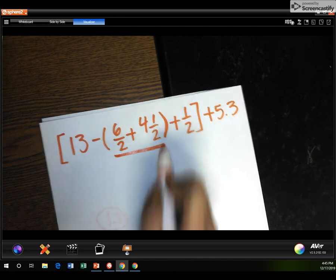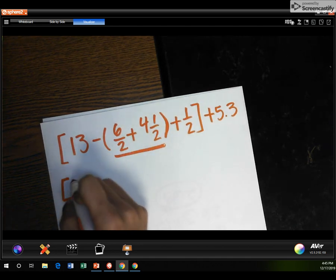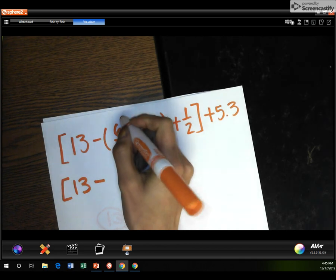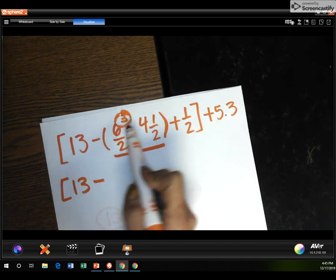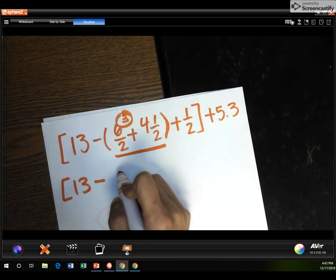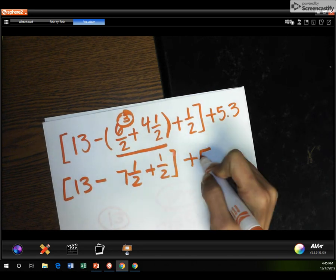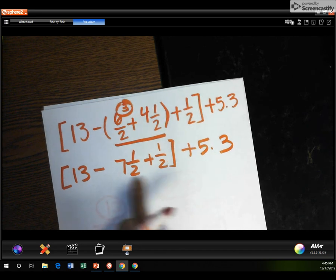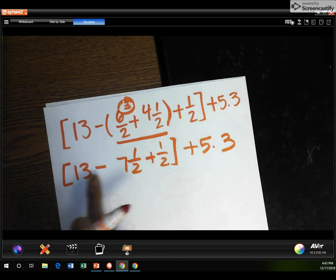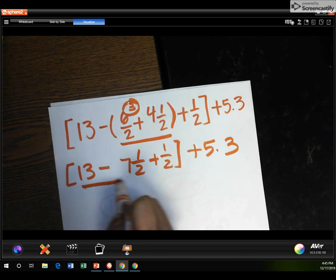All right. So first thing we're gonna do is we're gonna do parentheses, right? So that will be 13 minus... That's 3. That's 3 wholes, right? 3 wholes plus 4 and 1 half. So that will be 7 and 1 half. And plus half is what I got. And plus 5 and 3 tenths. The next thing I'm gonna do is... Am I gonna do this one first? No. You need to subtract first. So I'm gonna subtract that.